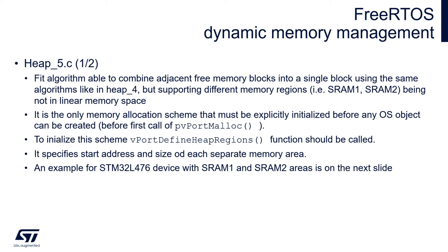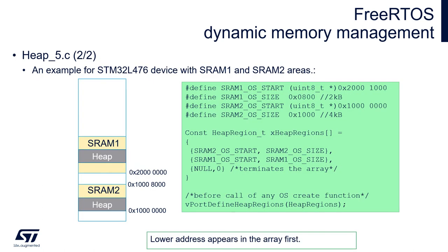As an example, the STM32L476 device has two different RAM areas, SRAM1 and SRAM2, which are not in linear space. To build a combined heap from these two areas, we define a HeapRegion_t type array where each row specifies the start address (from lower addresses) and size in bytes of each region. The array is terminated with a null and zero entry. Then we call vPortDefineHeapRegions before calling any operating system create function.